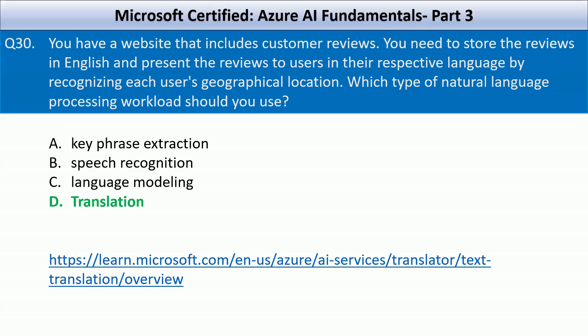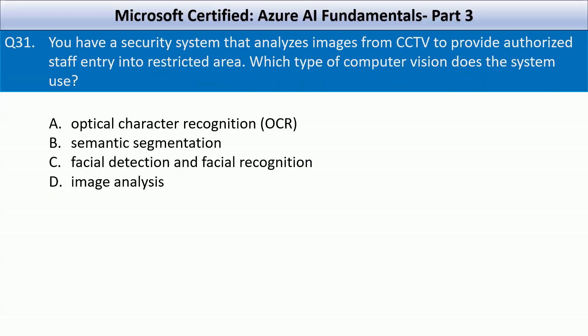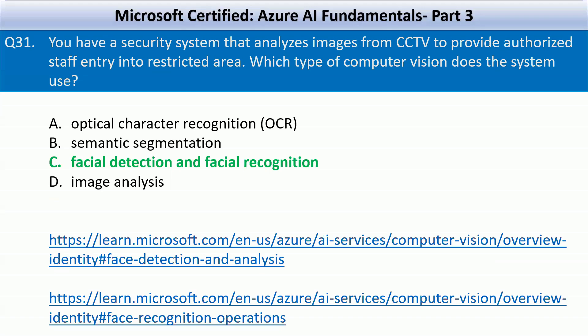Question number 31: You have a security system that analyzes images from CCTV to provide authorized staff entry into a restricted area. Which type of computer vision does the system use? Your options are optical character recognition, semantic segmentation, facial detection and facial recognition, and image analysis. The correct answer is facial detection and facial recognition. Facial detection is used for identifying faces in the images, and facial recognition is used for matching detected faces with a database of authorized personnel to determine access. There are two links on your screen — go through them to understand how facial detection and recognition works in Azure.